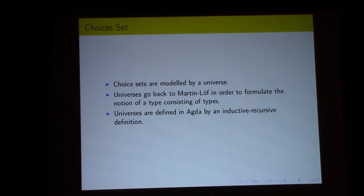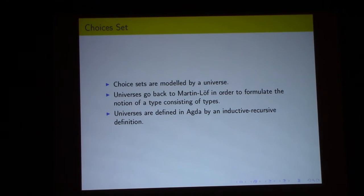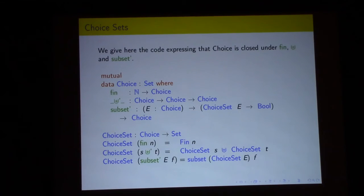A key feature of Agda is defining universes using inductive-recursive definitions. We use this to model the choice sets, which are modeled by a universe. This goes back to Martin-Löf's notion of type theory, consisting of types and universes defined in Agda using inductive-recursive definitions. The choice set in our universe is closed under Fin, disjoint union, and subset.